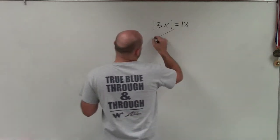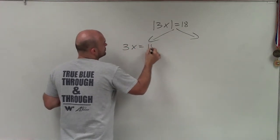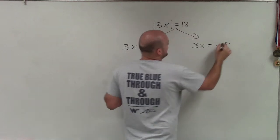So to do that, we need to lose the absolute value. We lose it when we create our two cases, which is 3x equals positive 18, and 3x equals negative 18.